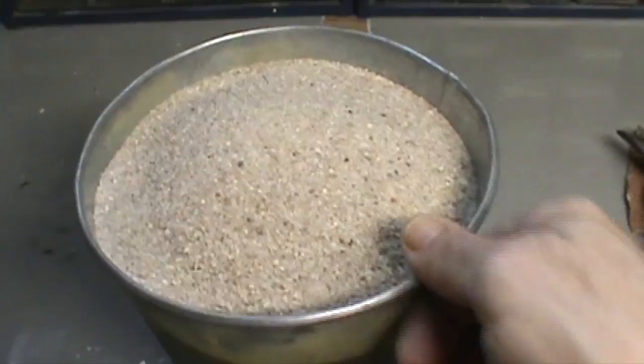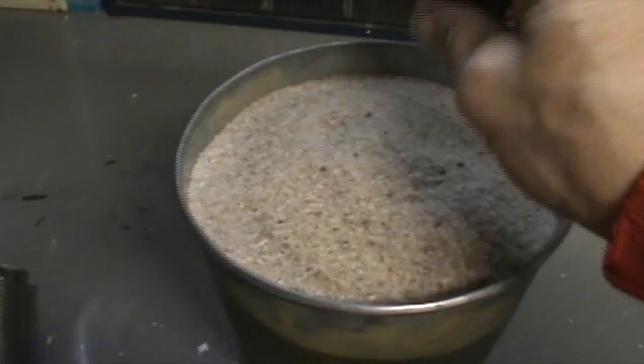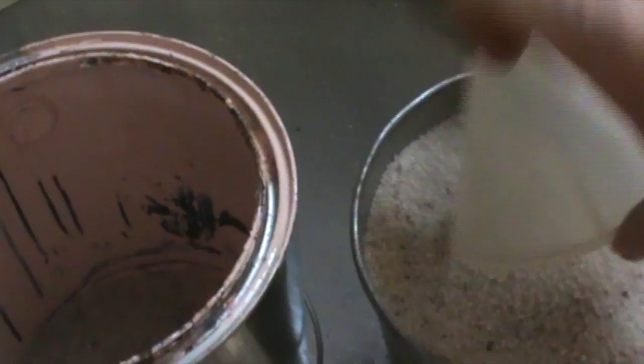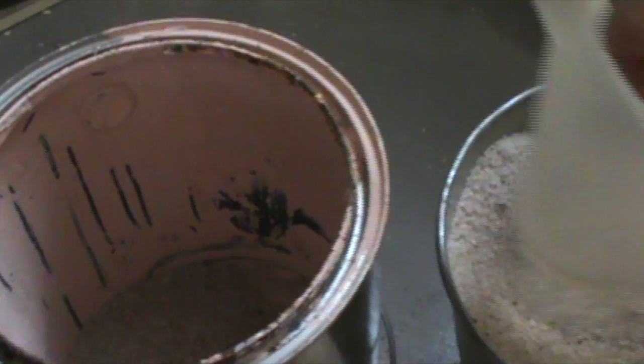And I've got a bucket full of sand here. So we'll start out by putting sand in the bottom of the paint bucket. You want to get about half an inch, a centimeter's worth of sand on the bottom of the bucket to insulate the bottom of the fire chamber from the bottom of the bucket.